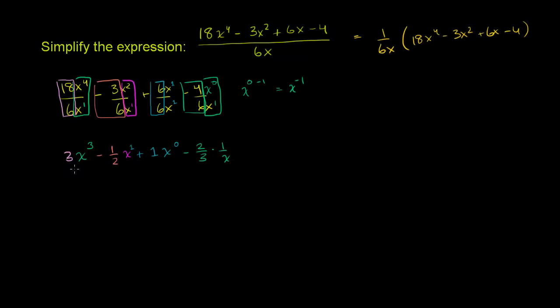And so let's just write our answer completely simplified. So it's going to be 3x to the third minus 1 half x plus 1, because this thing right here is just 1. So plus 1 and then minus 2 times 1 in the numerator over 3 times x in the denominator. And we are done. Or we could write this, depending on what you consider more simplified, this last term right here could also be written as minus 2 thirds x to the negative 1. But if you don't want a negative exponent, you could write it like that.